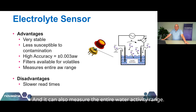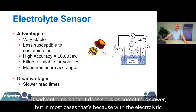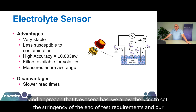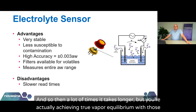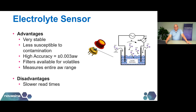The electrolytic sensor can also measure the entire water activity range. A disadvantage is that it does sometimes appear slower, but in most cases that's because Novacena allows the user to set the stringency of end-of-test requirements, and our default is a more stringent requirement than you would see in a chilled mirror instrument. As a result, it often takes longer, but you're actually achieving true vapor equilibrium with those longer test times. In terms of getting accurate measurements, verification standards are important. These come in two forms: saturated salt slurry standards, which are reusable for up to three years or longer if stored correctly, and unsaturated salt solutions, which are single-use consumables that run faster — about three to four minutes versus 20 to 30 minutes for a saturated slurry.